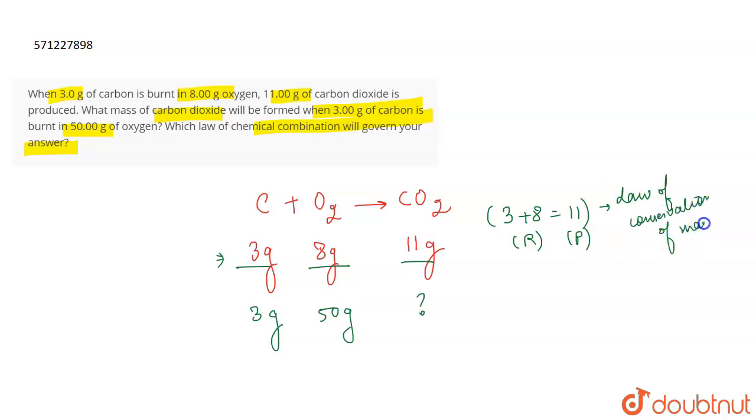But that is not the answer because it says which law is going to govern our answer. So there is one more law that governs our answer. So basically what happens is that as you can see here that only 3 grams of carbon reacts with 8 grams of oxygen. So 3 grams of carbon needs 8 grams of oxygen to react with. So when you are adding 50 grams of oxygen to react with 3 gram of carbon, what is going to happen?